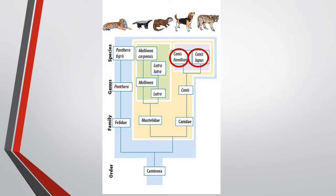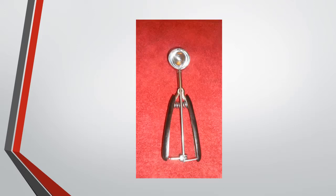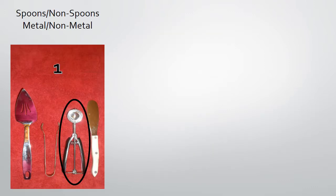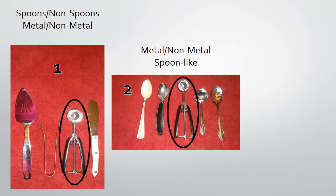Here's the point of this exercise. Remember how the proximity of two organisms on a cladogram is supposed to show how similar they are to each other? Keep that in mind as we compare where the cookie scoop ended up in the three sorting exercises. In the first sorting activity, we first sorted into two groups — spoons and non-spoons — then into two more groups: metal and non-metal. The cookie scoop ended up in a group with a couple of cake servers and a pair of tongs. In the second sorting activity, the cookie scoop ended up between an ice cream scoop and a gravy ladle.